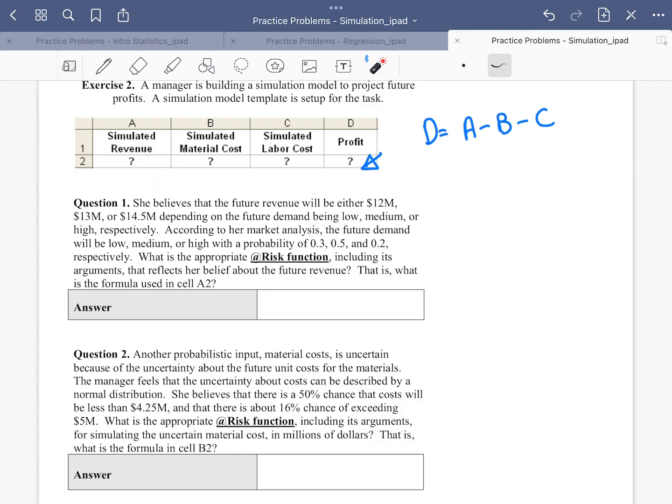So what is the appropriate at-risk function? We want to use a Palisade at-risk function. Which one would you think is appropriate to use here? Well, the first thing I notice here is there are three choices for the revenue, so they are sort of discrete: 12, 13, and 14.5. They have respective probabilities as well.